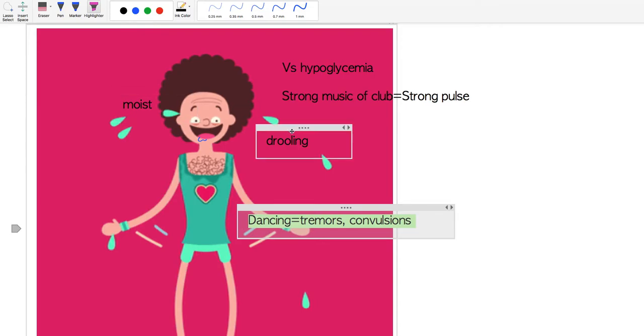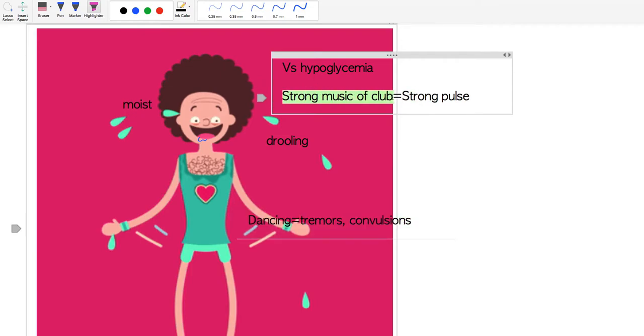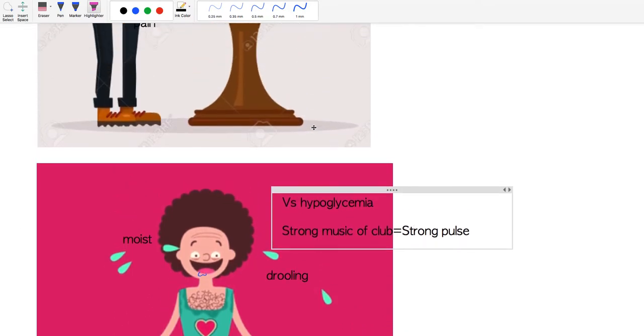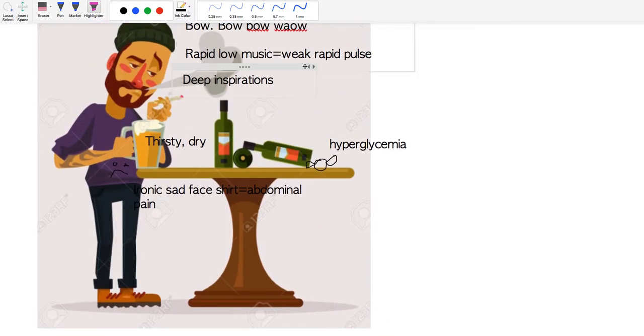Again, as I mentioned, the strong music of the club, nice and loud, is representative of a strong pulse. So again, contrasting with the bar, you have rapid but weak pulse at the bar versus strong pulse at the club.